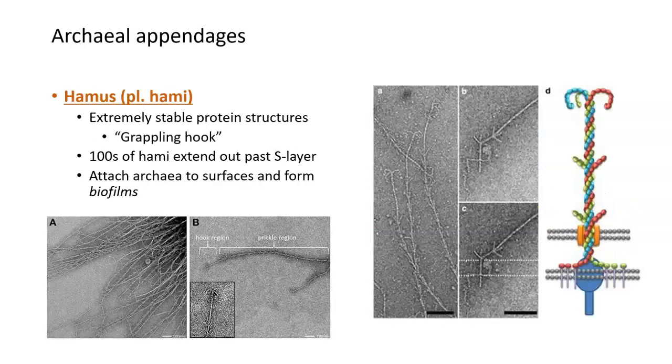One additional structure that's specific to archaea and not seen in bacteria are these structures called haemi, which is the plural version of haemis. These structures are made up of protein, and they're extremely strong and stable, and they have almost a grappling hook structure like the hooks used for rock climbing. They extend outward from the cell envelope, and they have these little hook structures at the end. Their main function is to help archaea attach to surfaces as well as attach to each other.